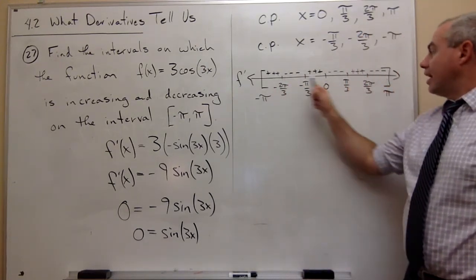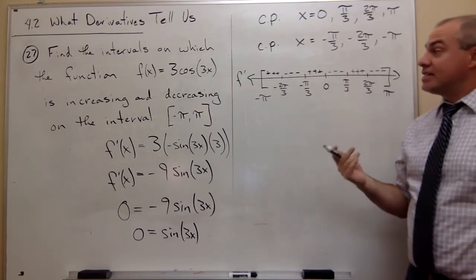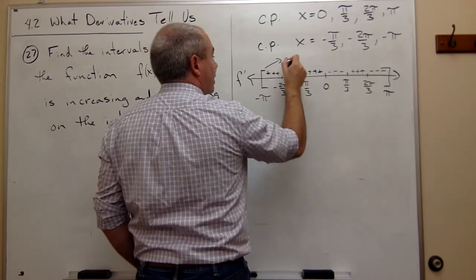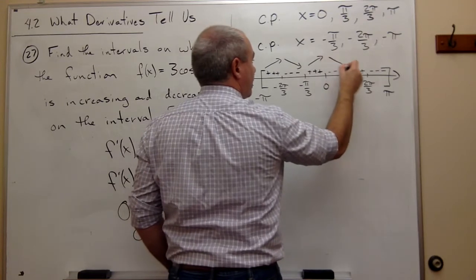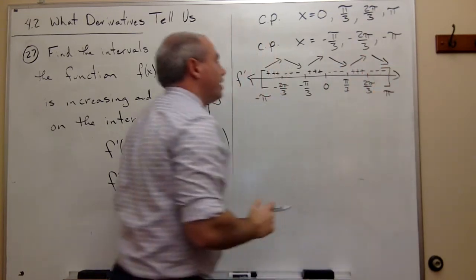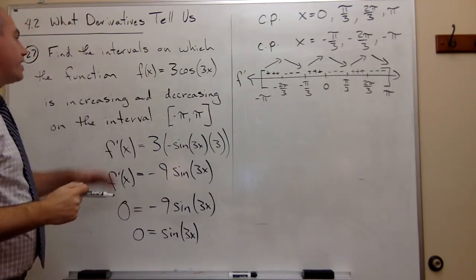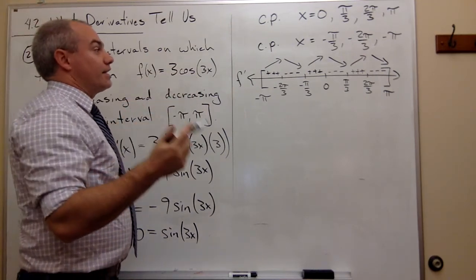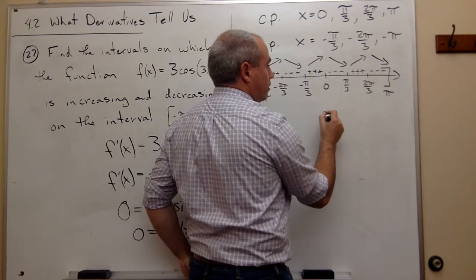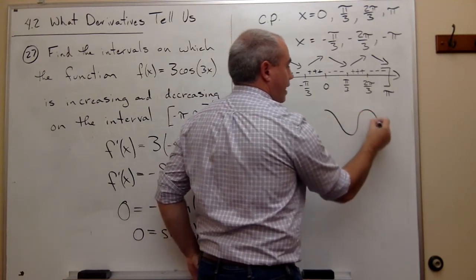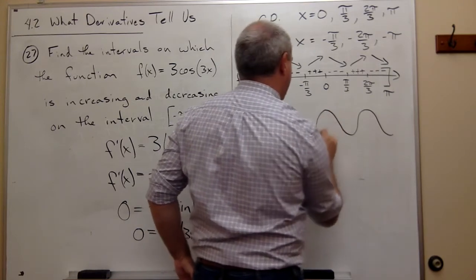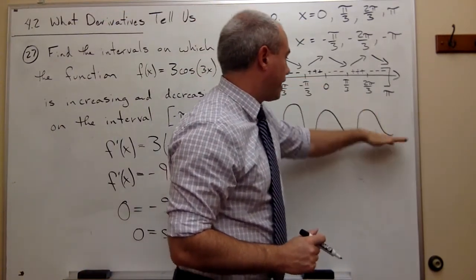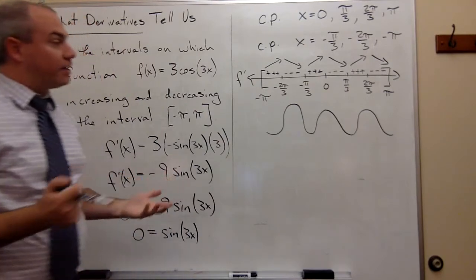Now that I've got my positives and my negatives here, now I can say where this thing is increasing and decreasing. Because remember, positive means going up, negative means going down. Positive is up, negative is down, positive is up, negative is down. This shouldn't be surprising to us, because we know what a cosine curve looks like. Cosine starts out, it goes down, and then up, and then down, and so on. So we would expect it to go down, up, down, up, all the way across, and so it does.